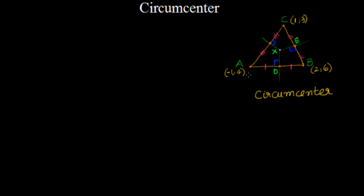Let's take a simple example and find the circumcenter of a triangle. Here I have triangle ABC where A is (−1, 4), B equals (2, 6), and C equals (1, 3).